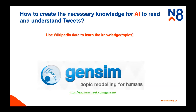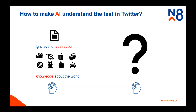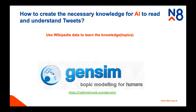The question is how we achieve this with AI. I mentioned two things: the right level of abstraction and knowledge about the world. The first question is how to get the knowledge about the world - how to create the necessary knowledge for AI to read and understand tweets. I'm suggesting using Wikipedia data to learn these knowledges, which I also call topics. Wikipedia covers a wide range of topics and can be considered a good source of knowledge.